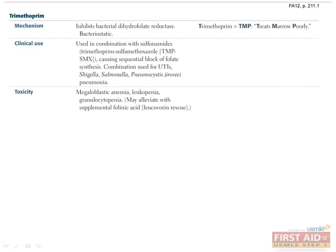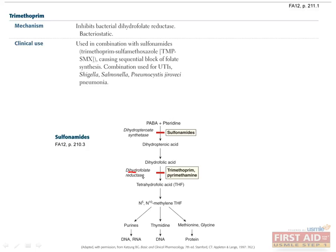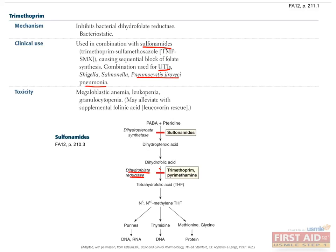Trimethoprim is bacteriostatic; it acts by inhibiting bacterial dihydrofolate reductase. Without dihydrofolate reductase, bacteria are unable to synthesize nucleotides for DNA and RNA synthesis, so this indirectly inhibits transcription and cell division. It is frequently used in combination with sulfonamides and is clinically indicated for recurrent or complicated UTI and Pneumocystis jirovecii pneumonia. Trimethoprim also affects human dihydrofolate reductase to a lesser extent, so you may need to administer folinic acid, or leucovorin, to alleviate side effects of megaloblastic anemia, leukopenia, and granulocytopenia.